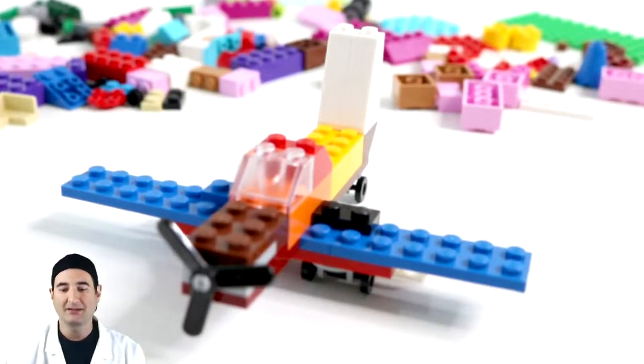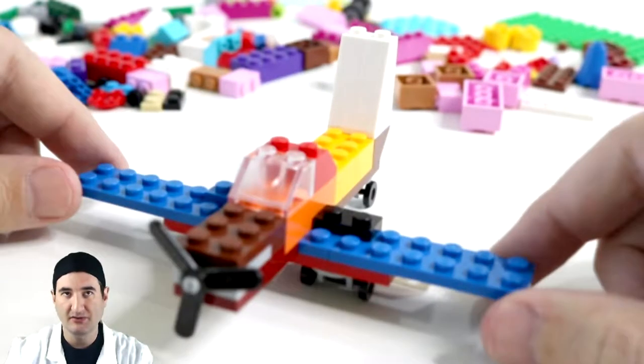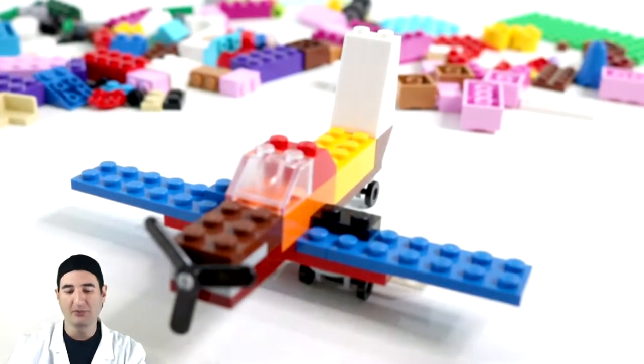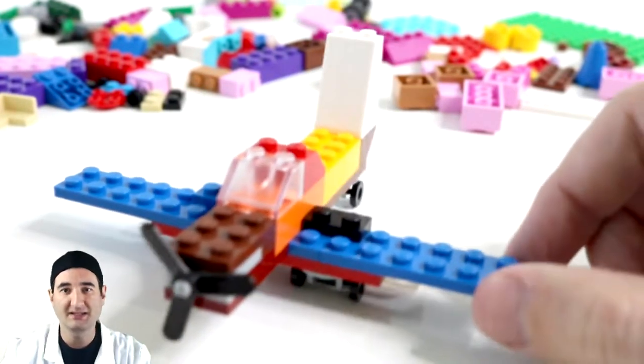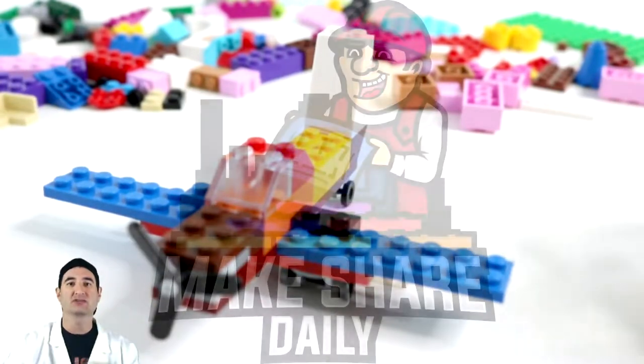So this is Dusty Crophopper, the crop duster. We built a crop duster airplane. Let's go see how I built this with only five minutes of time and 221 pieces from a classic kit. Okay, let's go check it out.